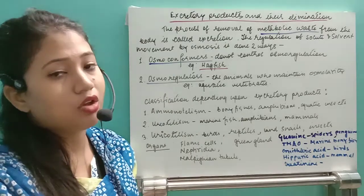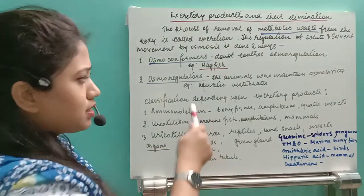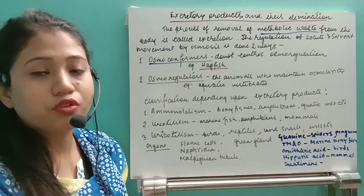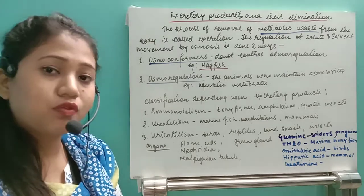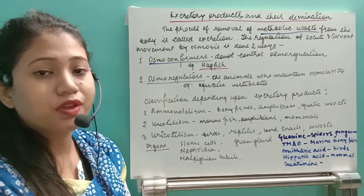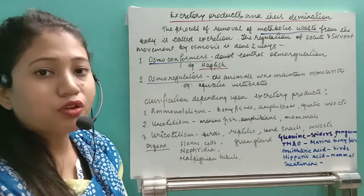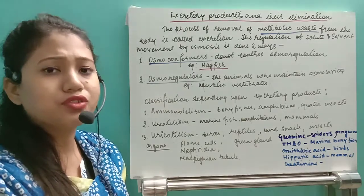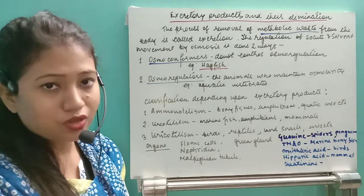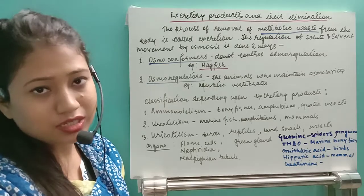Osmoregulators can maintain their salt and water balance. Aquatic vertebrates such as fishes are osmoregulators. They maintain osmoregulation because their body covering — their scales — prevents the outflow or inflow of solutes. In the case of chondrichthyes, they live in a hypertonic saline marine solution, so solutes from outside cannot enter inside their body.